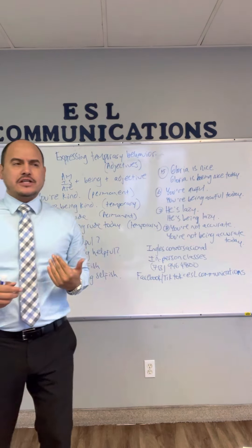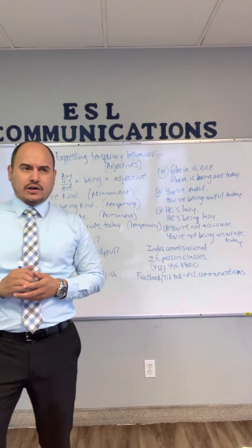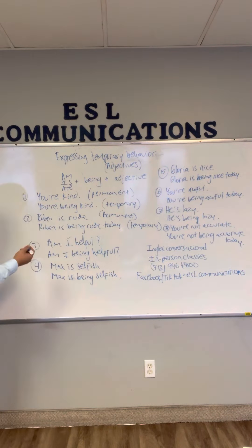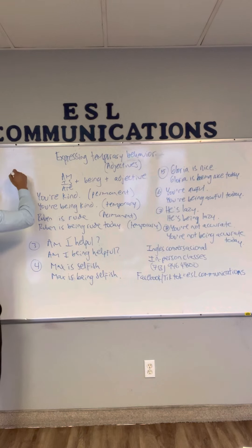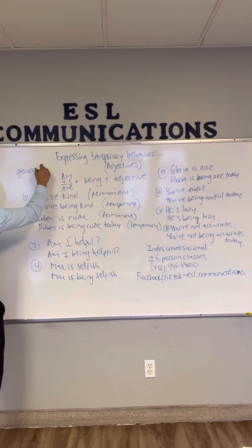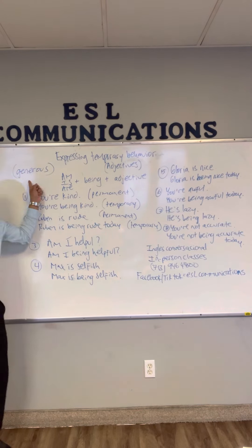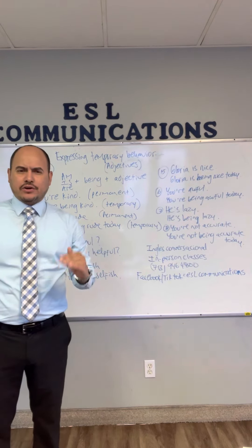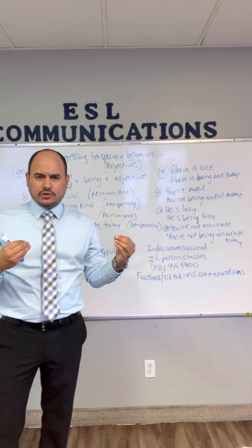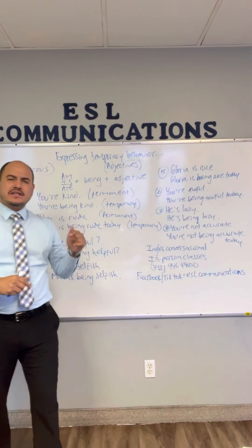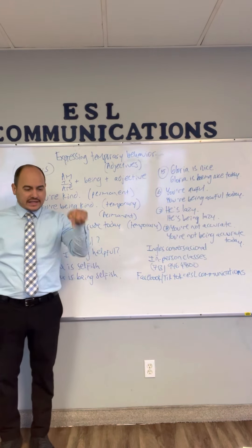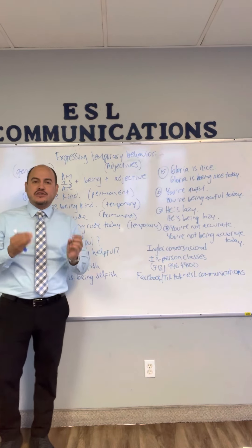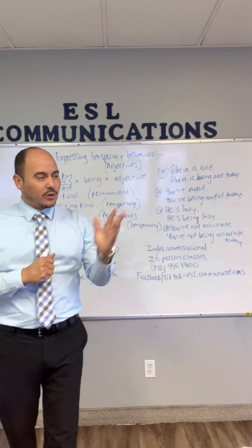Adjectives that can express temporary behavior — for example, 'generous.' Repeat: generous. Si yo describo a alguien como algo permanente, let's say: 'My mother is generous' — mi madre es generosa. But if that specific day she is acting that way: 'My mother is being generous today' — como se está portando generosa hoy.